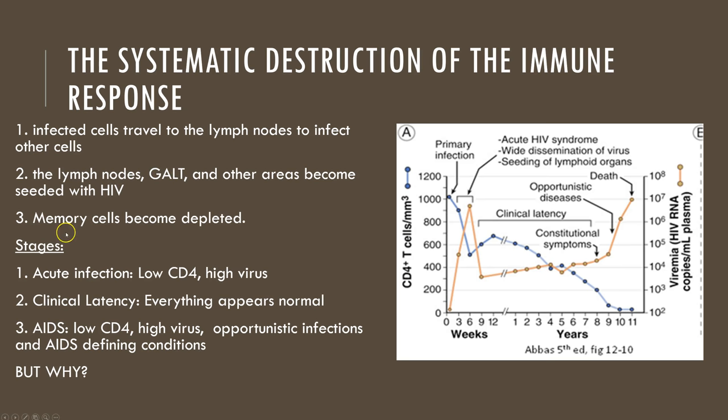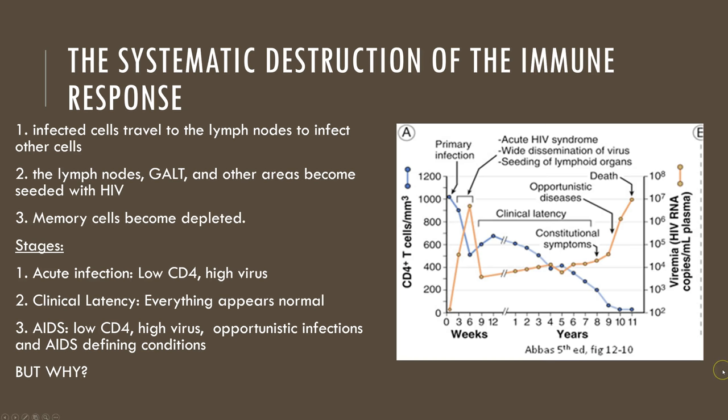Memory cells are going to become depleted at these sites of local proliferation. Most infected individuals can mount a decent anti-HIV immune response that's both humoral and cell-mediated. But despite that, all untreated HIV-infected individuals will go on to develop chronic HIV, which leads to AIDS. This profound immunodeficiency is a result of the depletion of CD4 T cells. The different stages of HIV infection are acute infection, clinical latency, and AIDS.